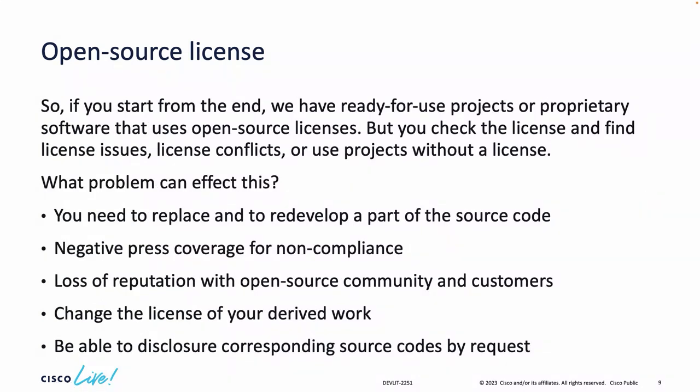Starting from the end: imagine you create some automation tools, use them as a service or sell them under some license, and they include other open source projects. At the end, you check the licensing of all open source projects included in your derived work and you find issues — license conflicts or projects used without a license. What problems can that cause?